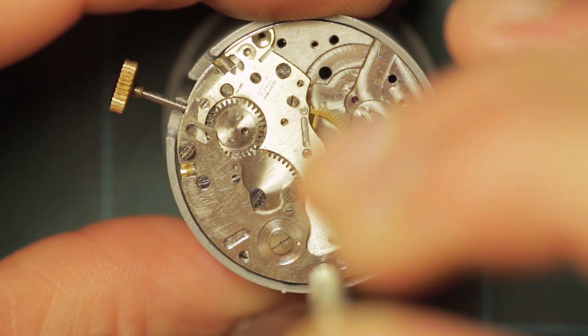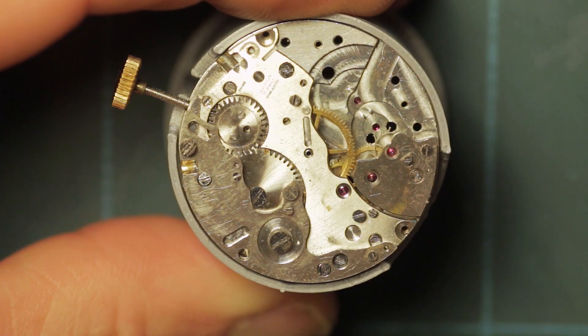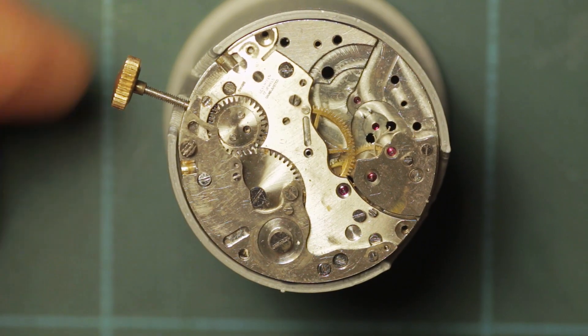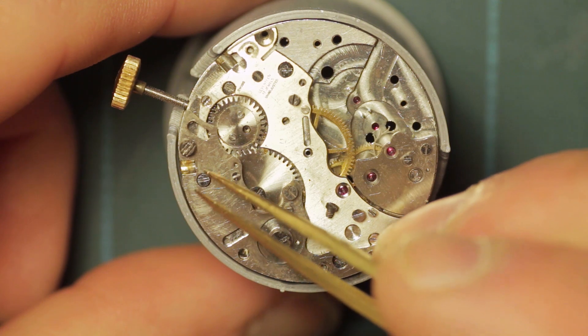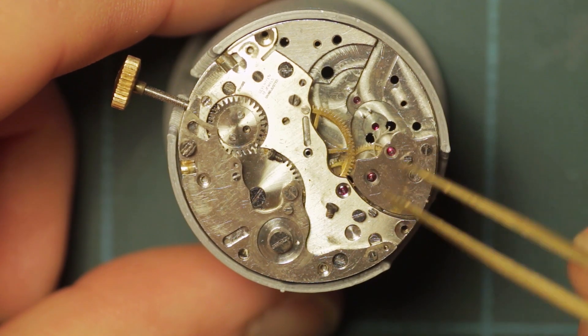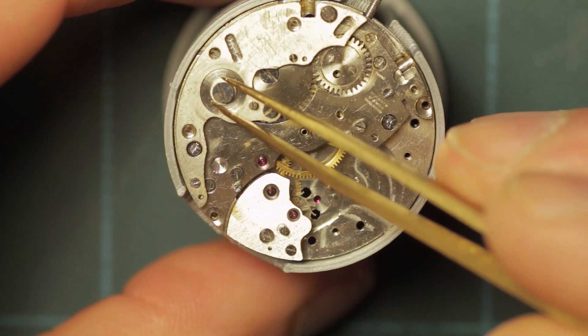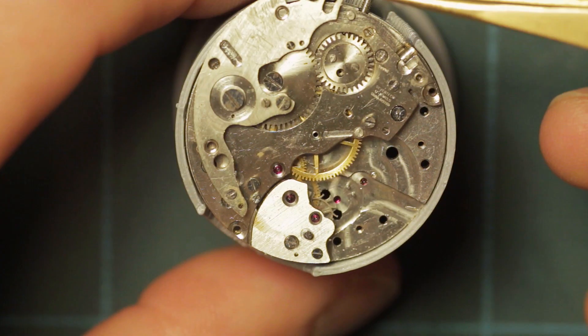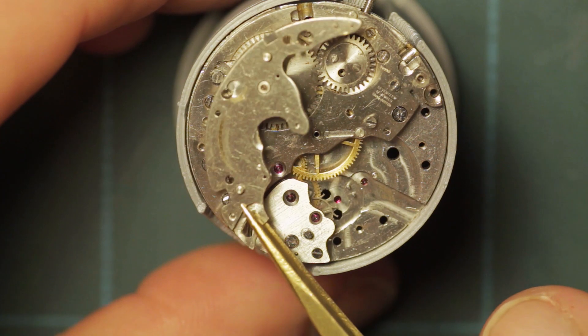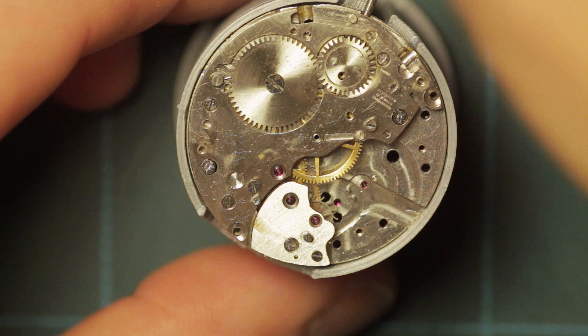And the final part of the chronograph works is this sub-bridge or intermediate bridge, as it were, which is just above the main watch barrel bridge components and is held in place by two screws as you see here. And once those are removed, the plate itself just lifts away like so. And that's the completed chronograph side disassembly. Next, the remainder of the watch movement will be disassembled.